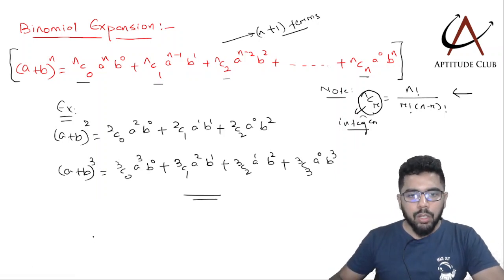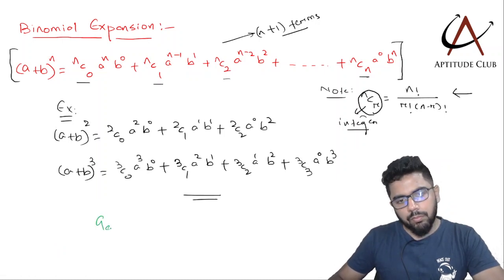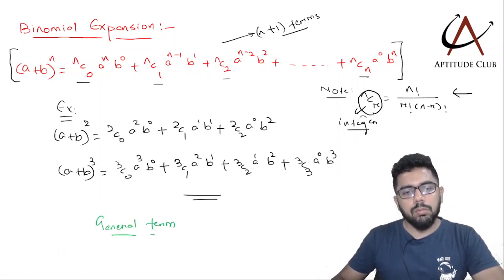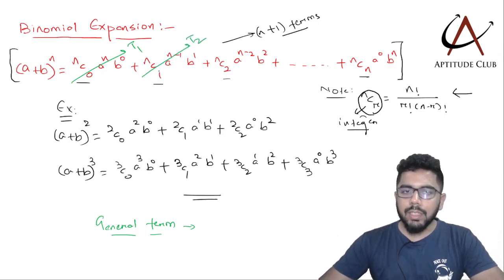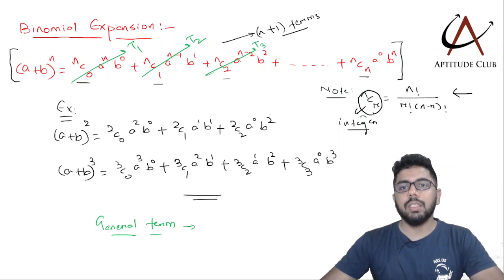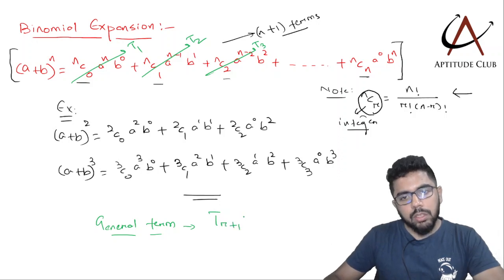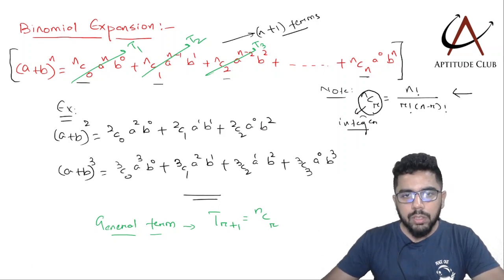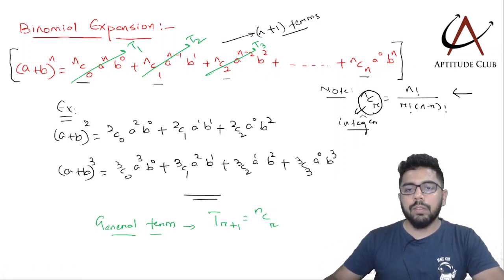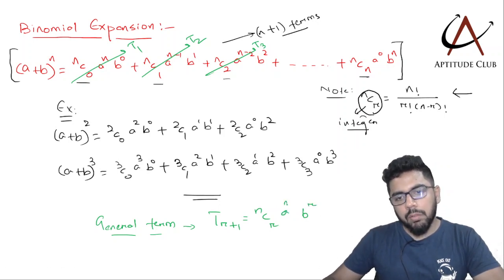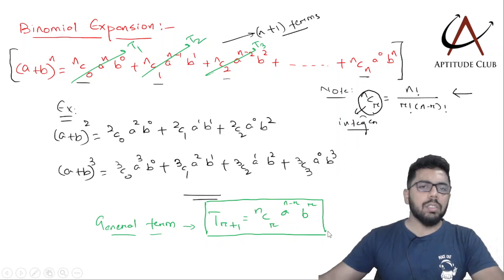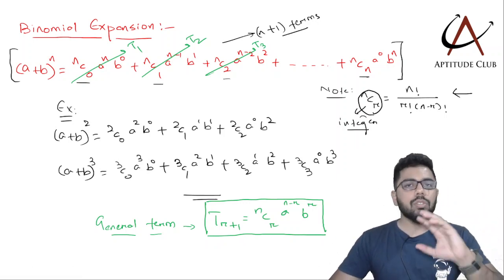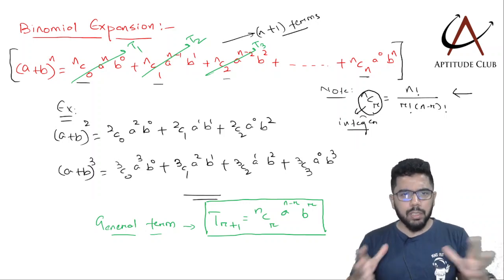Now, what is the general term in the binomial expansion? The first term has coefficient nC0, the second nC1, the third nC2. So the (r+1)th term has coefficient nCr. Whatever the subscript of the coefficient, that is the power of b — so nCr gives b^r. The remaining power goes to a, giving a^(n−r). The general term is T(r+1) = nCr · a^(n−r) · b^r. The sum of the powers of a and b in each term is always n.